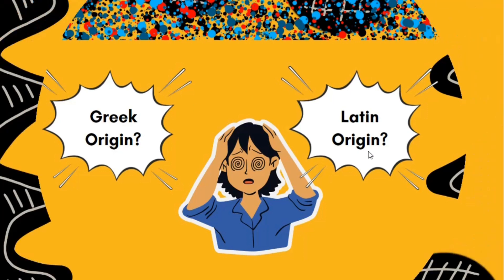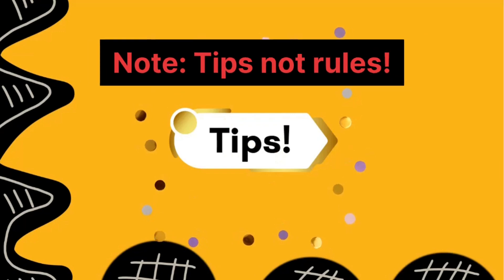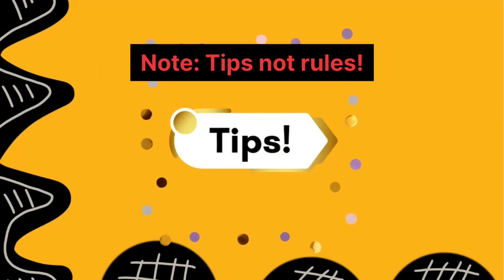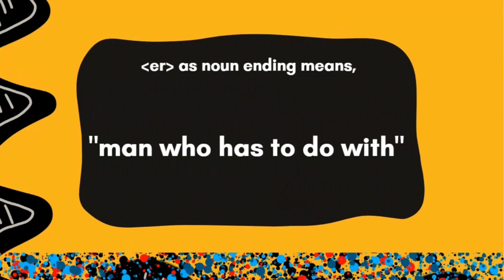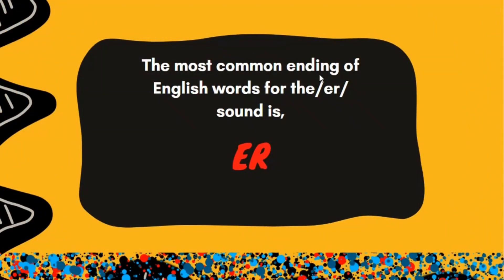So now I'm going to give you some tips which will make your life easier. Whenever you want to write the ER sound at the end of agent nouns — words representing a person who does something — you will use these tips. Number one: the most common ending of English words for the ER sound is ER. Always remember this. If you don't know which ER will come at the end, make a safe guess and write ER.